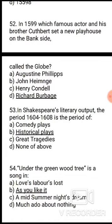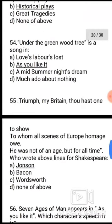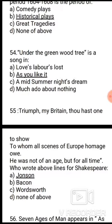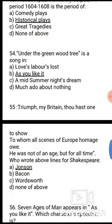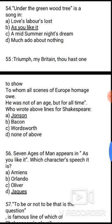Question 53: In Shakespeare's literary output, the period 1604 to 1608 is the period of — the correct answer is option B, the great tragedies. Question 55: 'Triumph, my Britain, thou hast one to show to whom all scenes of Europe homage owe — he was not of an age but for all time.' Who wrote these lines about Shakespeare? The correct answer is option A, Ben Jonson.